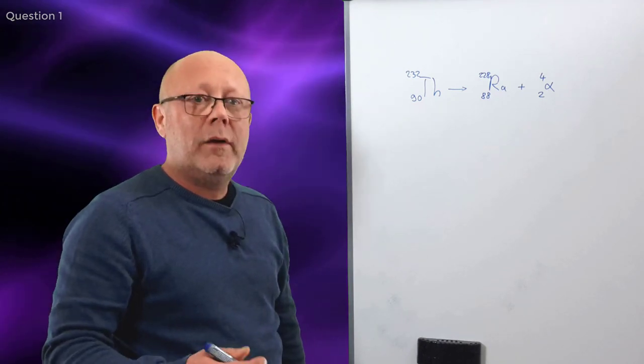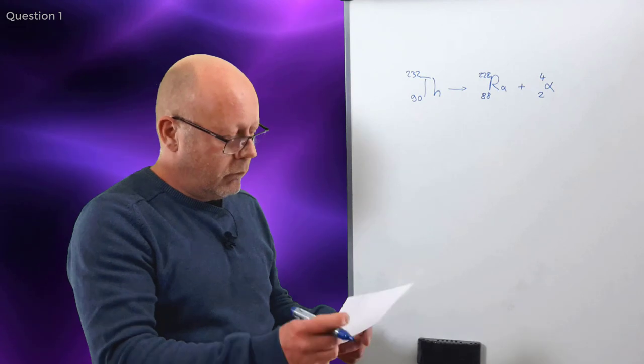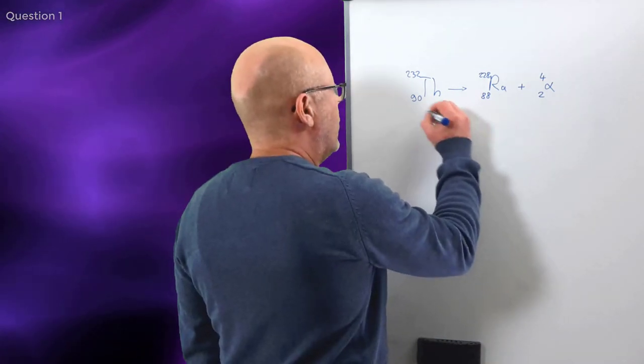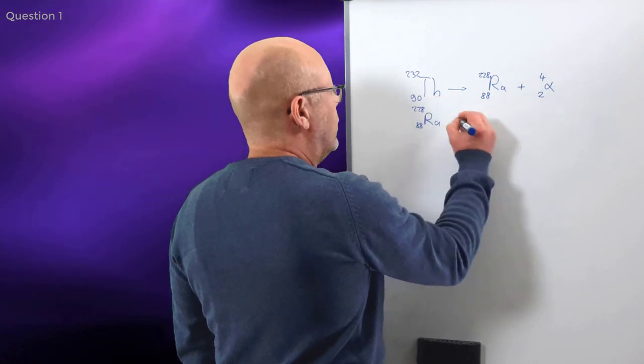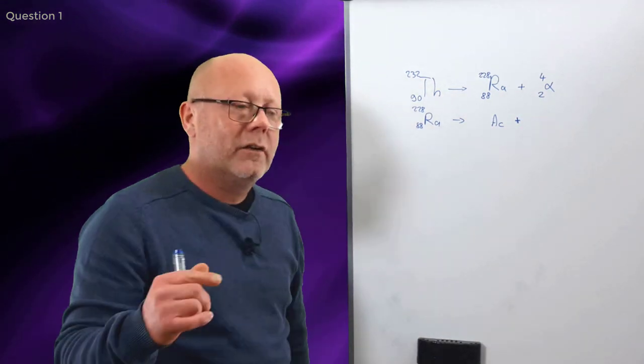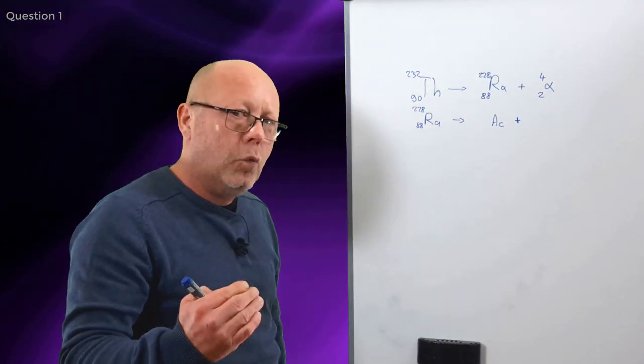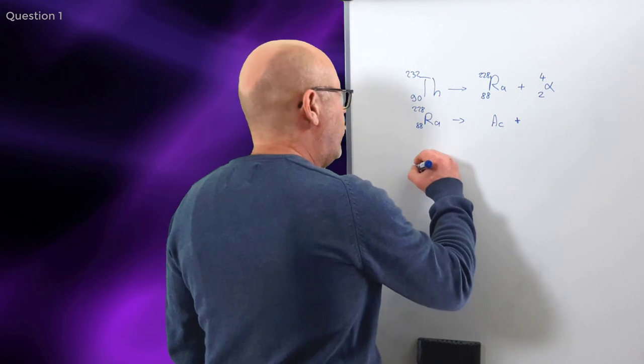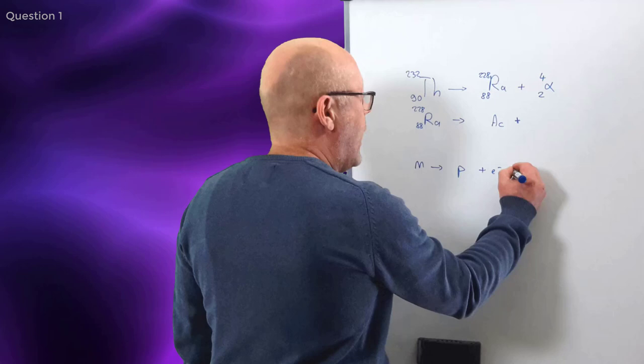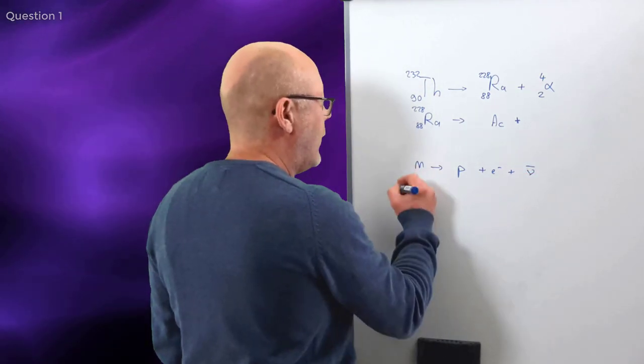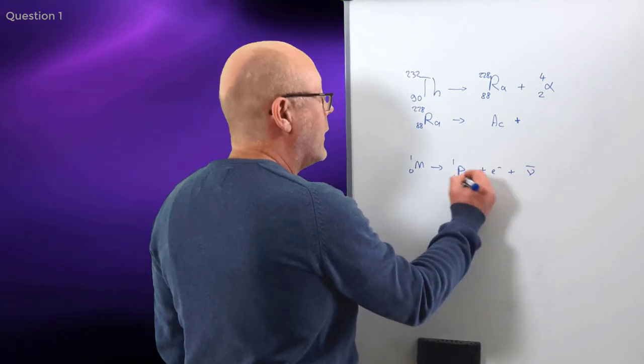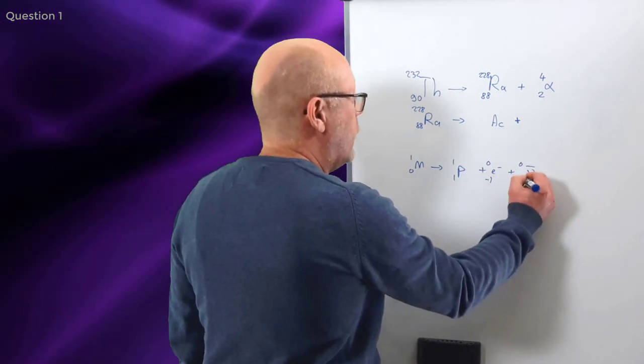Radium-228 will decay via beta minus into actinium. So, we've got our radium-228 becomes actinium plus. Okay, so it's a beta minus. What does a beta minus decay do? A beta minus transforms a neutron into a proton plus an electron and an anti-neutrino. So, if I put the numbers, I get here 1, 0, 1, 1, 0, minus 1, 0, 0.